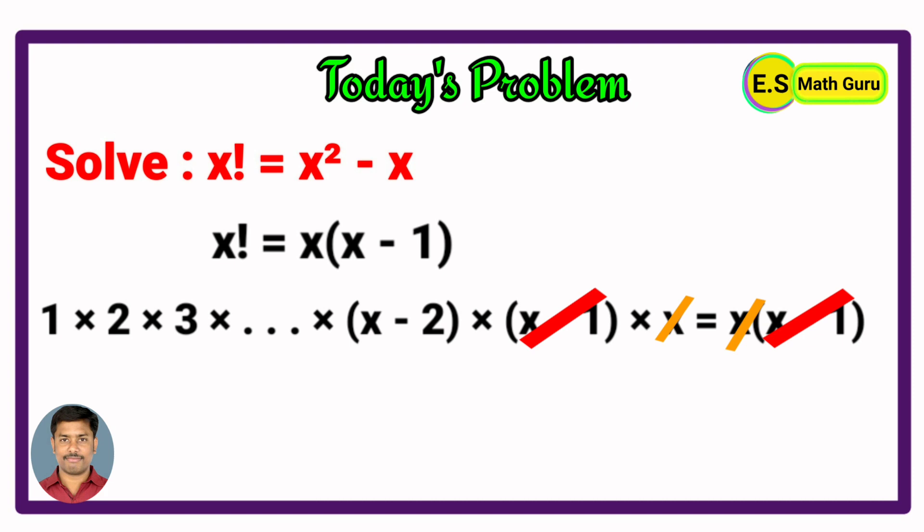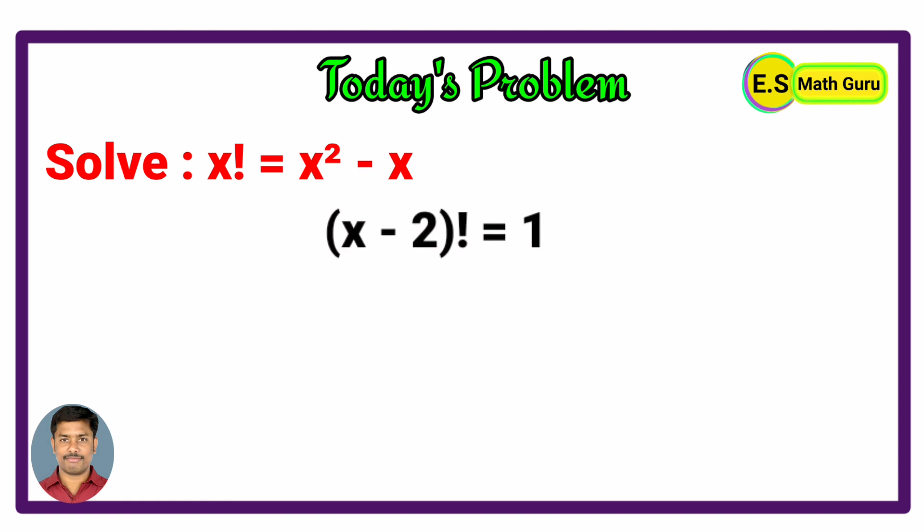Then it remains 1 into 2 into 3 into so on (x minus 2) equals to 1, and this can be written as (x minus 2) factorial equals 1.